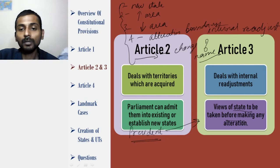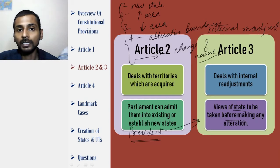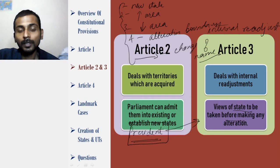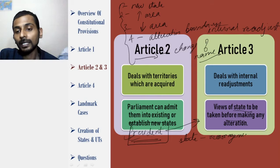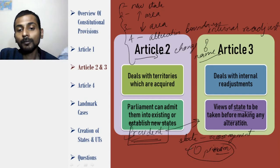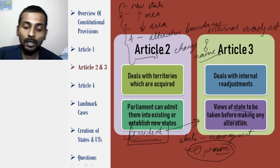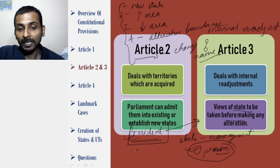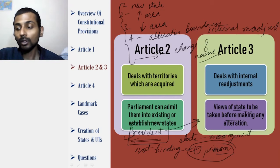So the President recommends to the parliament that the boundary of a state can be changed, its area increased or decreased. Now this bill introduced in parliament cannot be passed before the opinion of the state where this rearrangement needs to be done has been taken. The constitution allows for taking the opinion of the state where some alteration is to be done. However, this opinion is not binding — do note that. The opinion that parliament takes from the state is not binding by nature.